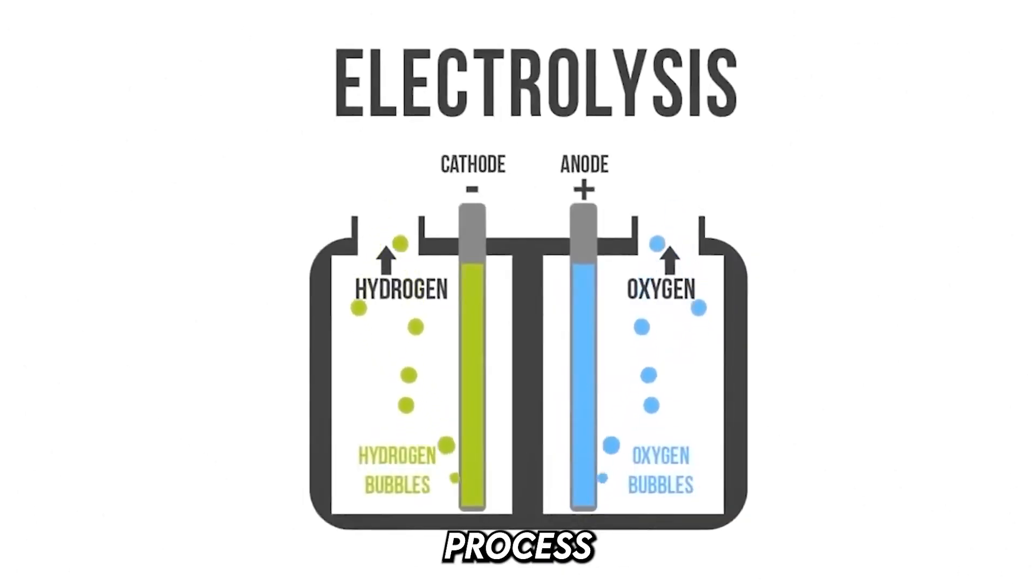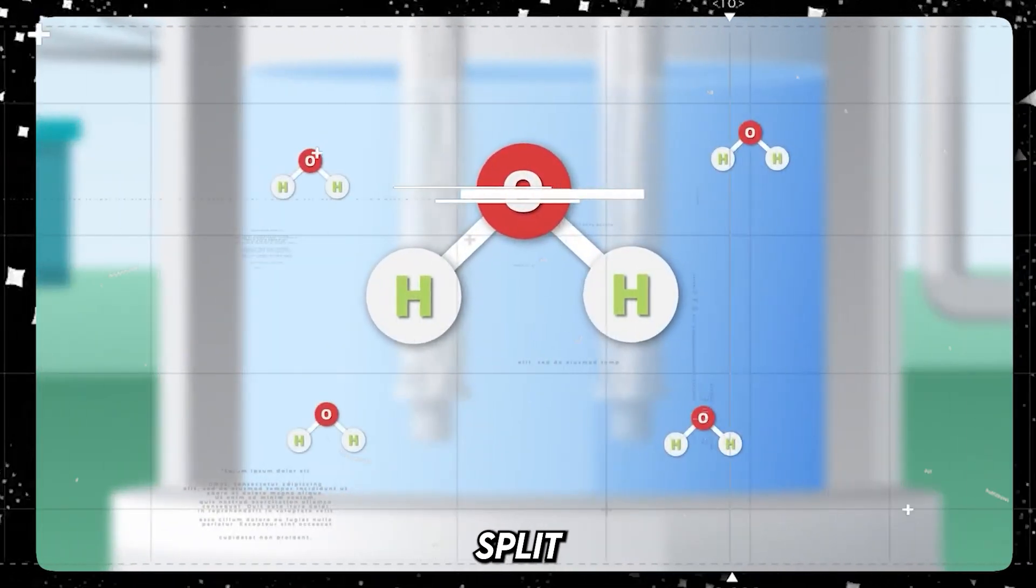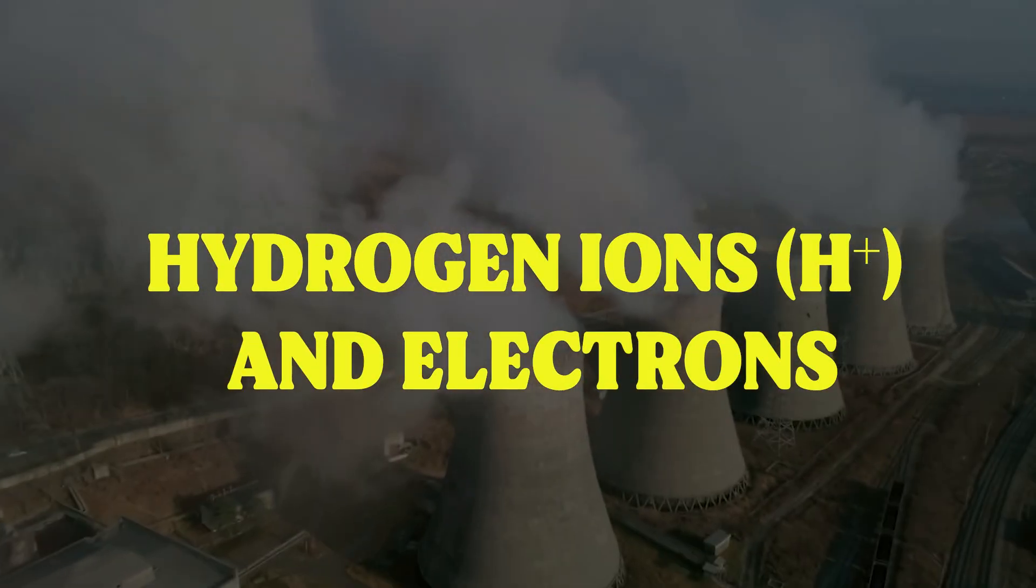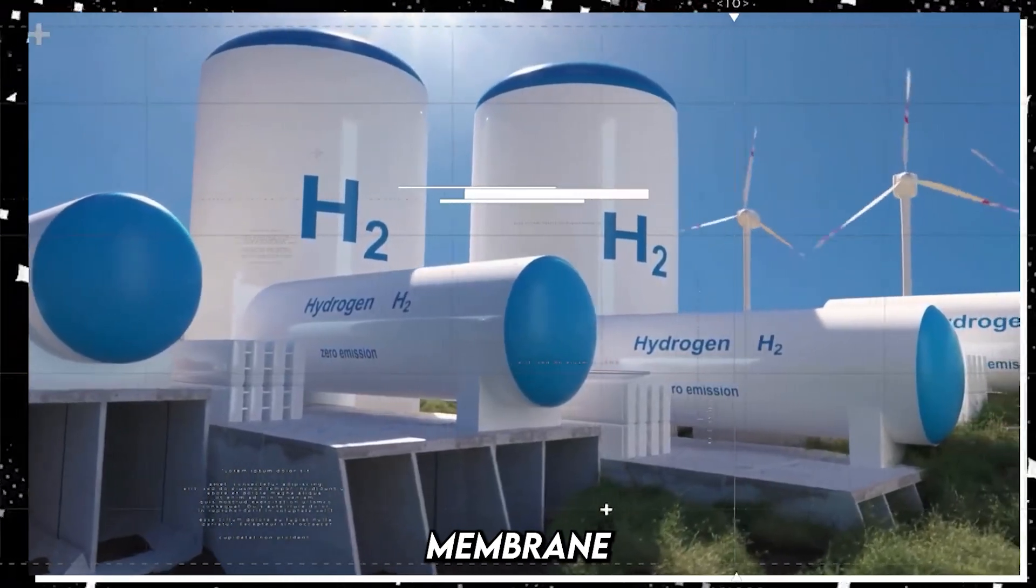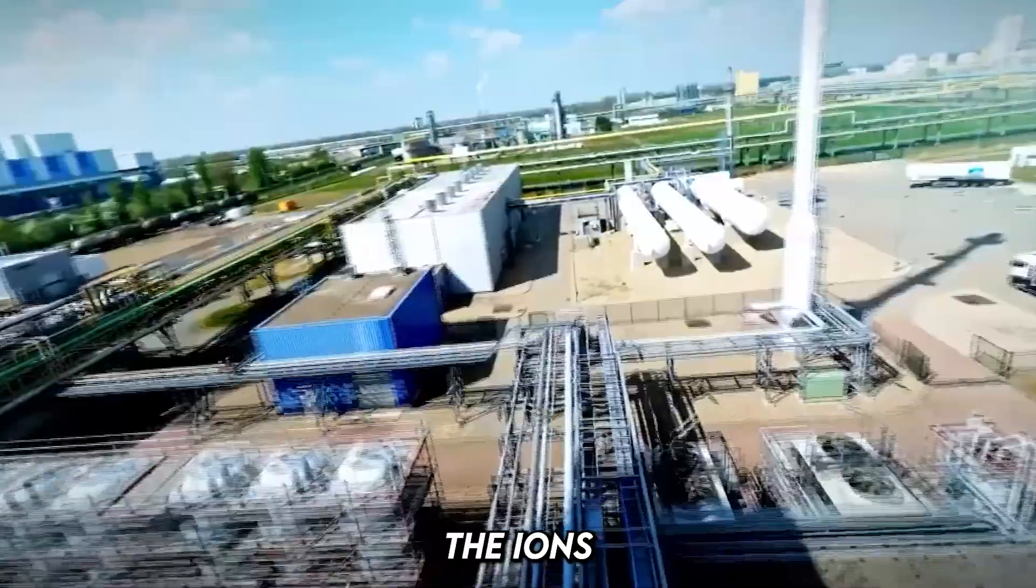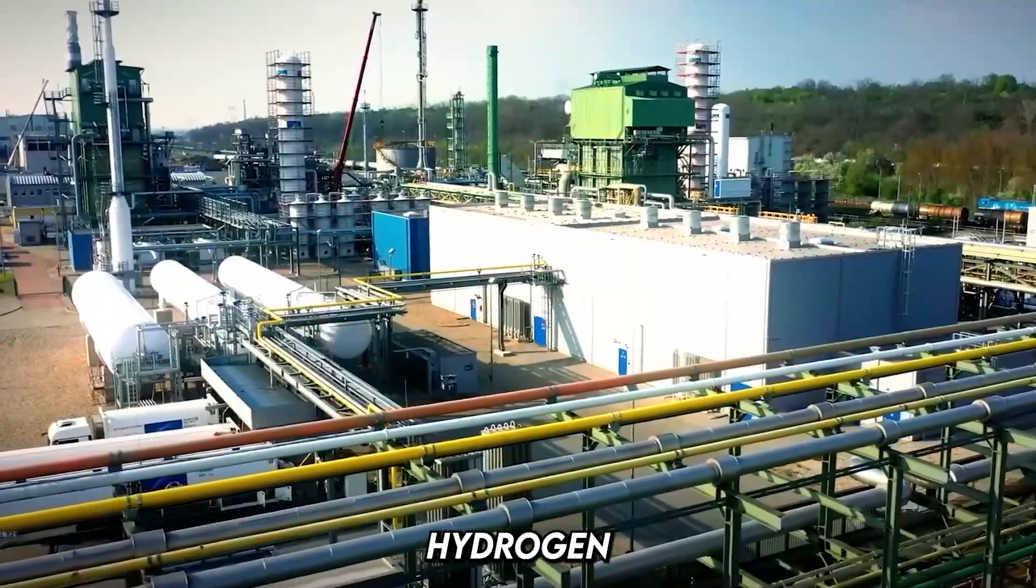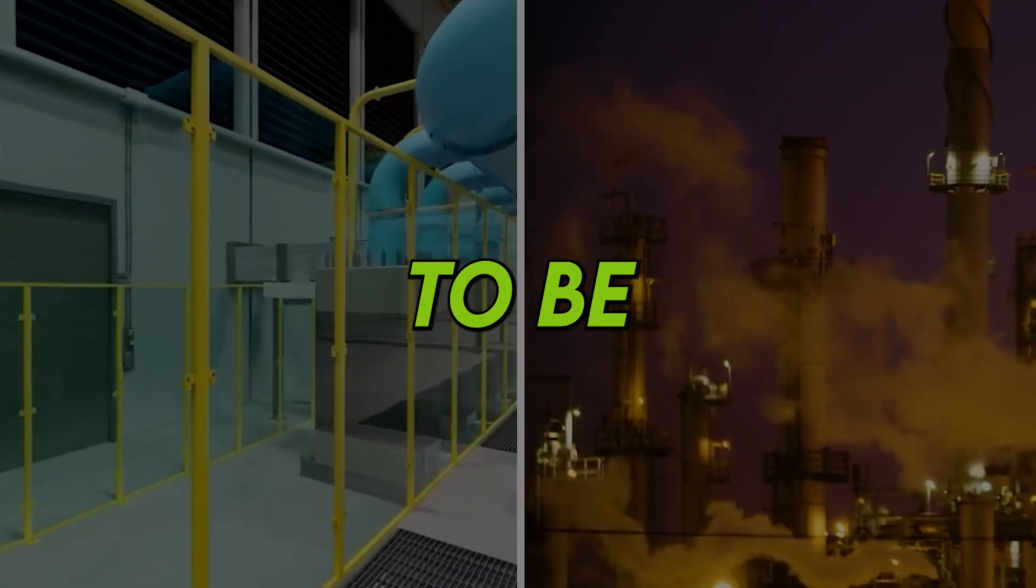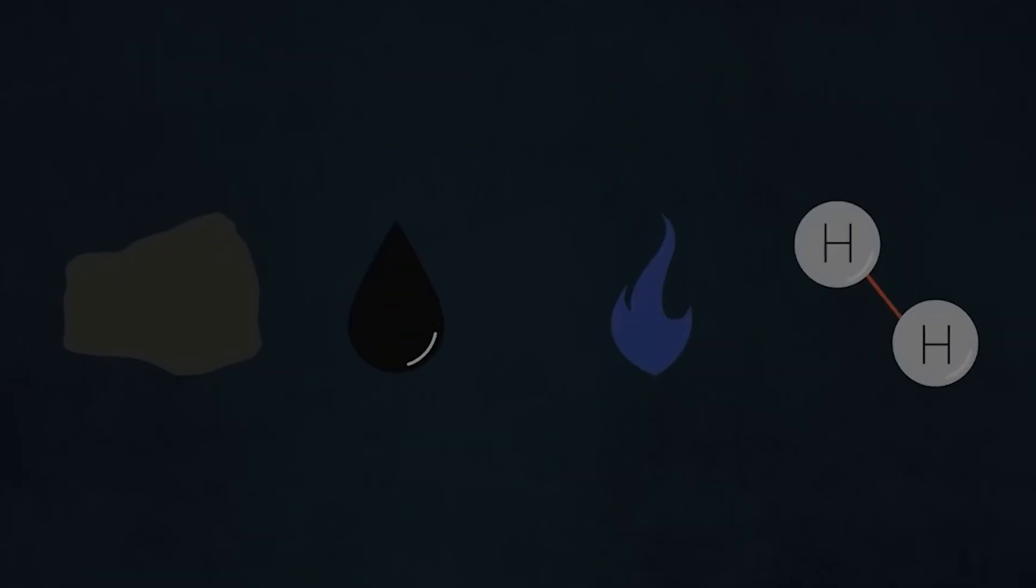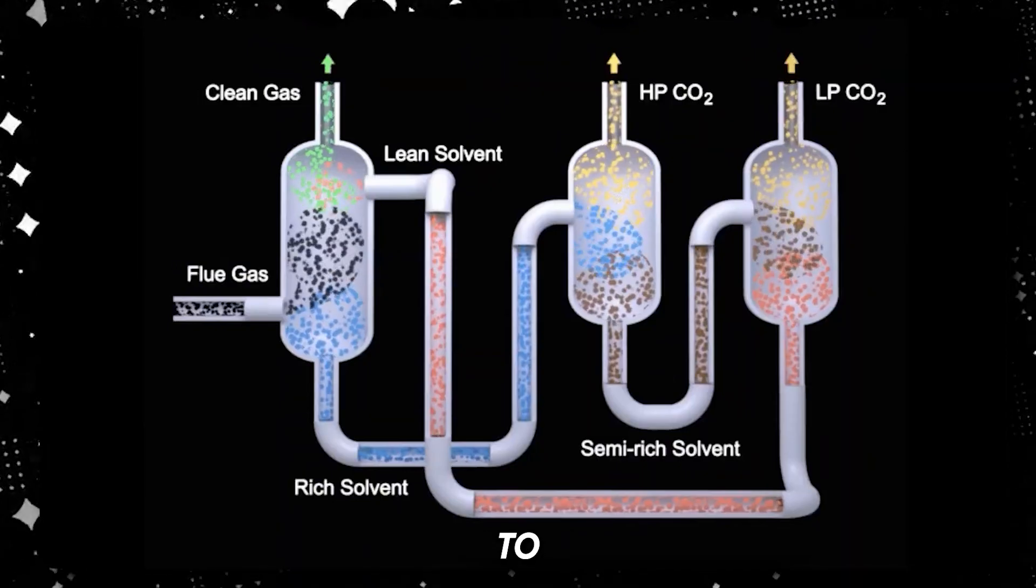Electrolysis process: At the anode, positive electrode, water molecules split into oxygen gas, hydrogen ions (H+), and electrons. The hydrogen ions pass through a special membrane into the cathode, negative electrode. At the cathode, the ions combine with electrons to form hydrogen gas. For this process to be truly green, the electricity used must come from renewable sources. This ensures zero emissions from start to finish.